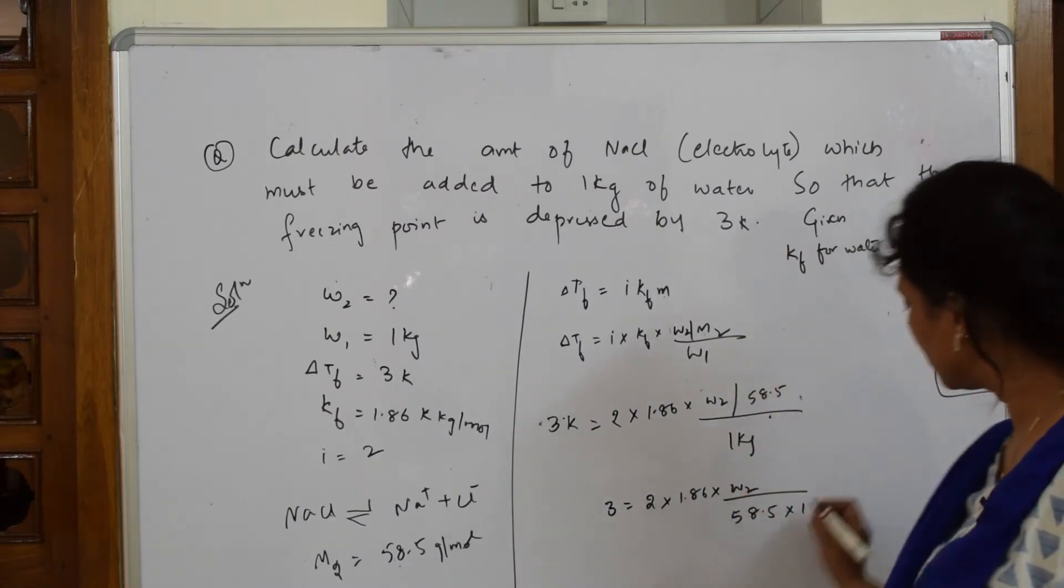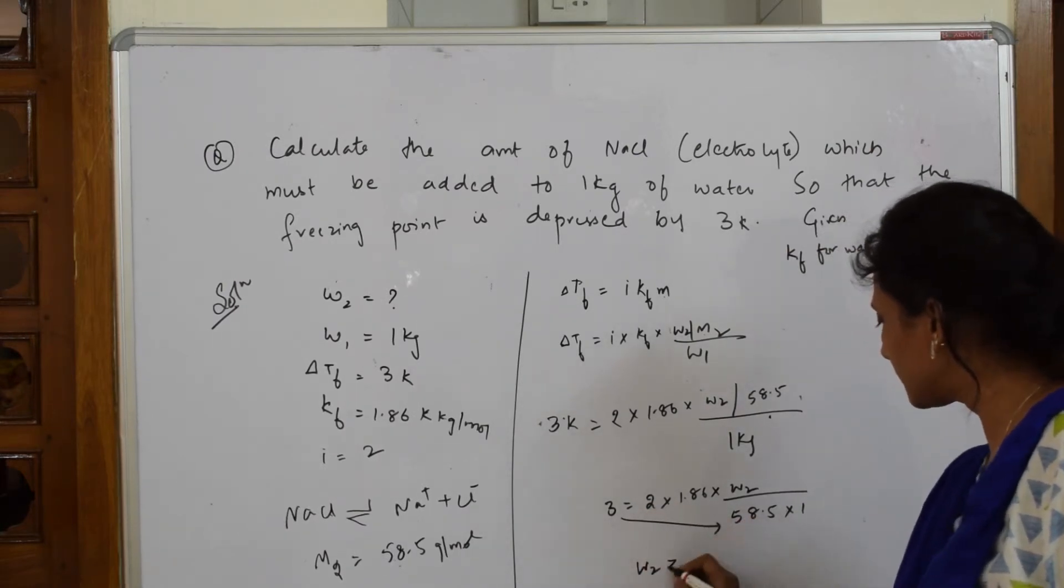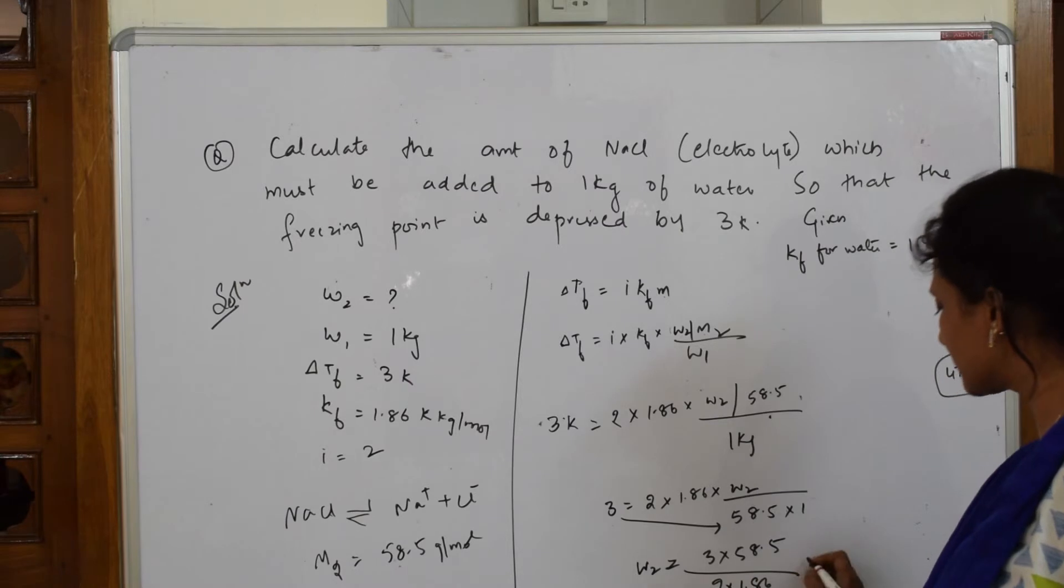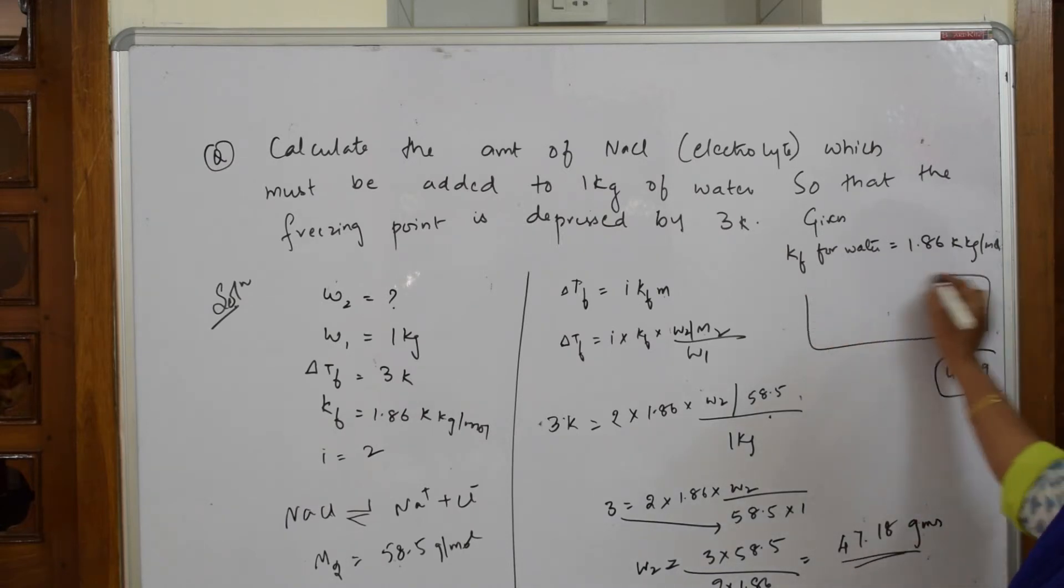I have to find w2. w2 comes out by cross multiply: 3 into 58.5 divided by 2 into 1.86 which comes to 47.18 grams. This is your answer. So w2 answer, weight which is asked to find out, is equal to 47.18 grams.